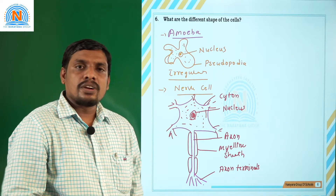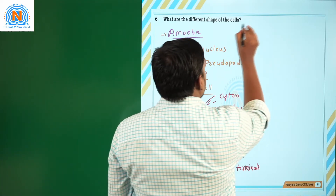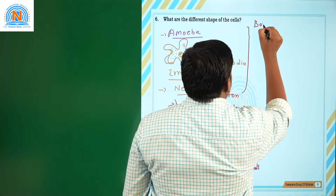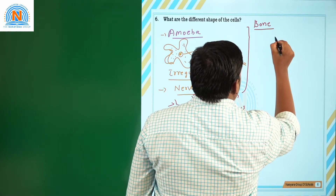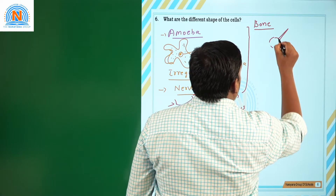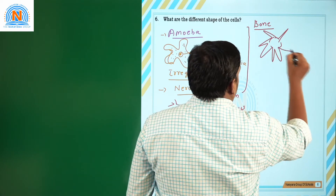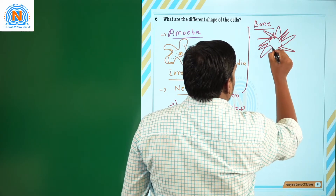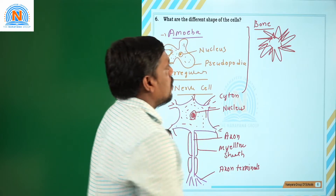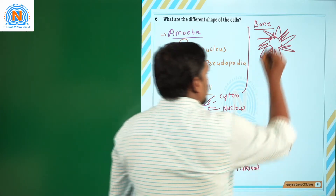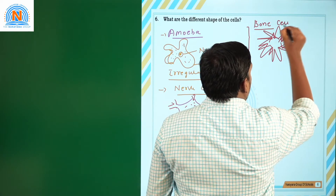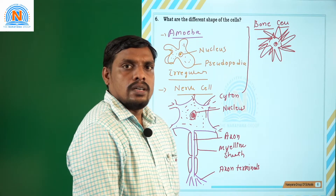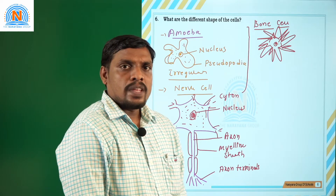The nerve cell is completely different from other cells. Take a bone cell — it is somewhat star-shaped or another kind of shaped cell, and it also has a prominent nucleus in the middle of the cell.